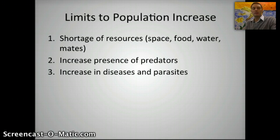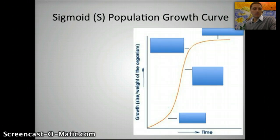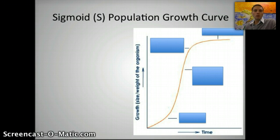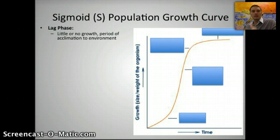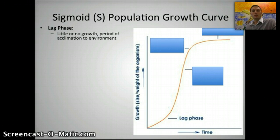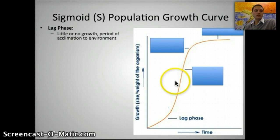If we track how a population changes and grows — going back to our rabbit example — let's say the rabbit population is entering a meadow with lots and lots of resources. The first thing that's going to happen is that as those rabbits are starting to get used to their environment and become established, we're going to see a period of lag phase. During the lag phase, there's little or no growth — this is the period of acclimating to their new environment. We might see a little bit of growth, but not a lot overall.